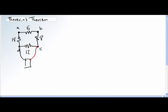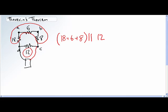Now what happens? So that's 18 and 6 and 8 are in series, but they're now in parallel with the 12. So 18 plus 6 plus 8 in parallel with the 12.